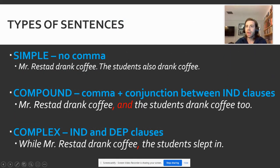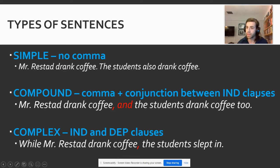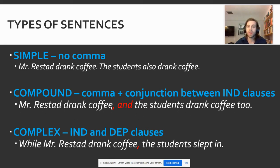This kind of amplifies the types of sentences that we can create. We've got a simple sentence, which just has a single subject and a verb — like 'Mr. Restad drank coffee.' Mr. Restad is the subject, drank is the verb. We've got compound sentences, which are two independent clauses — two subjects and two verbs connected by that comma and that conjunction. And now we've got a third type called a complex sentence, where I can join a dependent clause to an independent clause or vice versa.